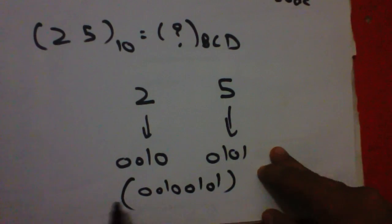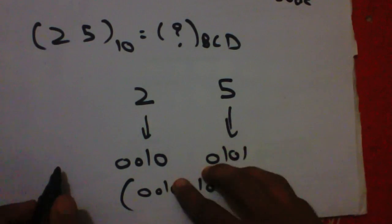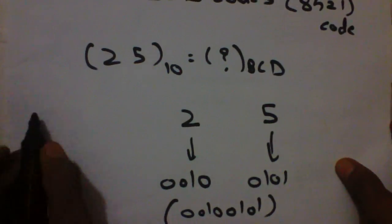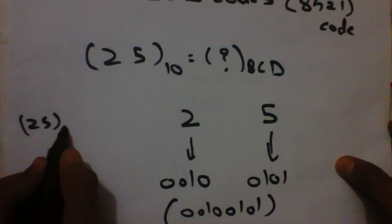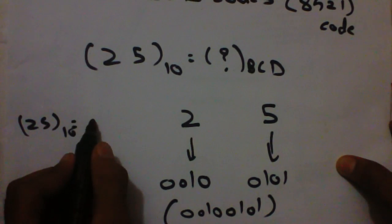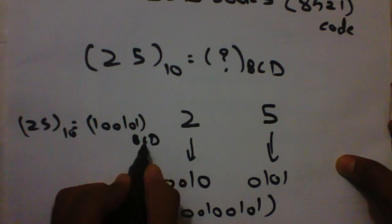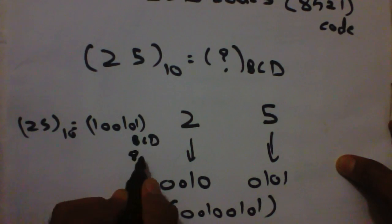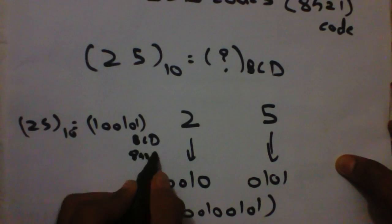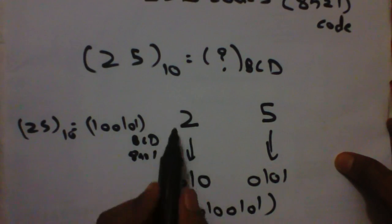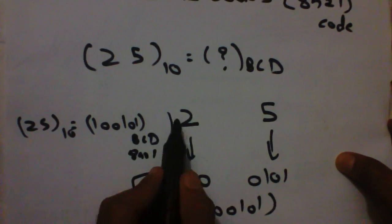This is the answer. The leading zeros are neglected, so the final answer is 25 decimal is 00100101 BCD. Or you can write here 8421. This is the method how we can calculate.